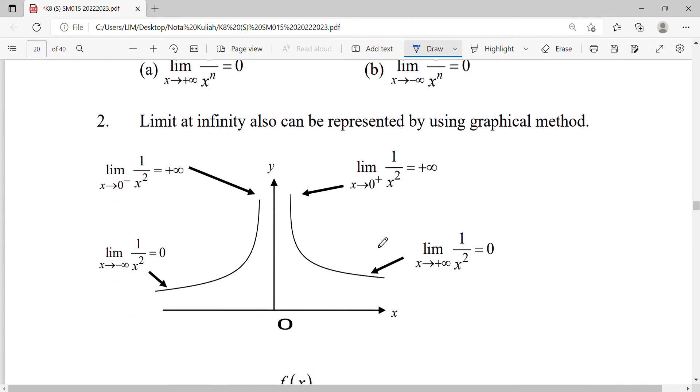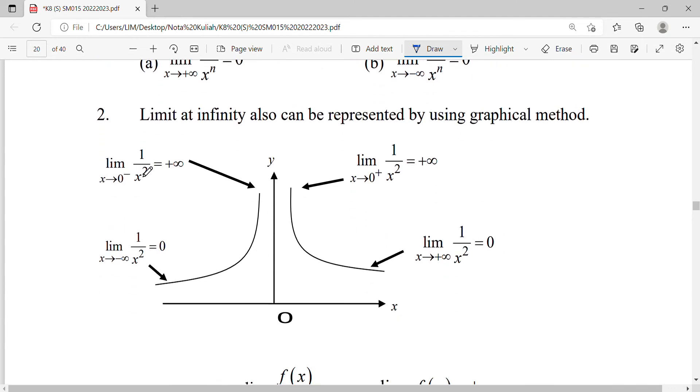Before this, when we did one-sided limits, we got the answer infinity. If you get positive infinity, it means the graph goes upward. If your answer is negative infinity, the graph goes downward. But this is one-sided limit.